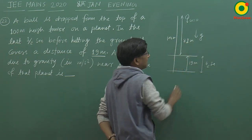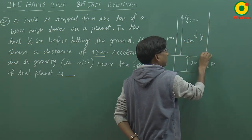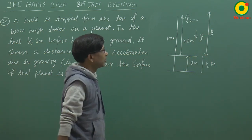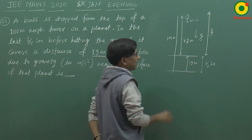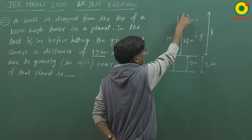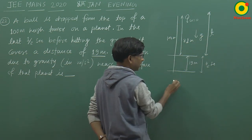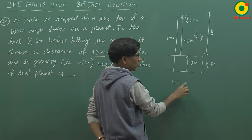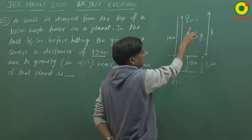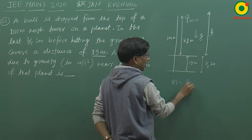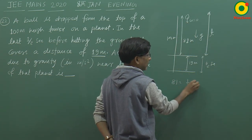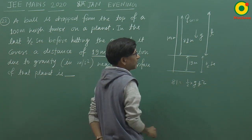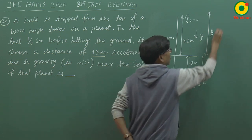ऐसा मान लेते हैं कि यह 81 meter travel करने में T time लिया है। तो kinematic equation करता हूँ: displacement T second में 81। S = UT + ½AT² — U 0 है, तो ½G T² यह हो गया पहला equation।